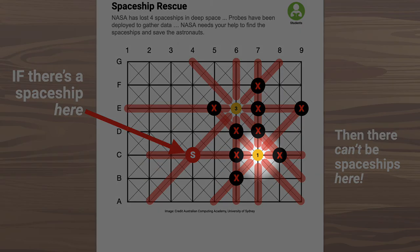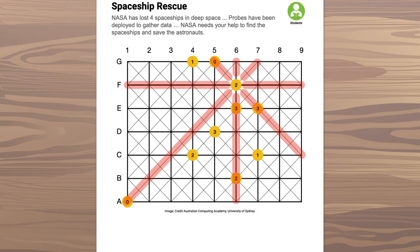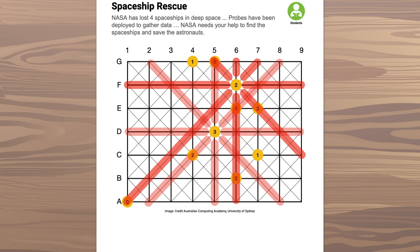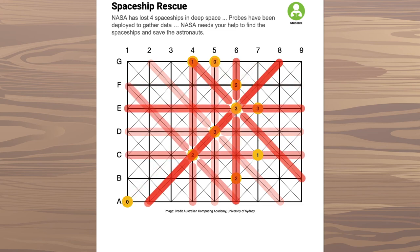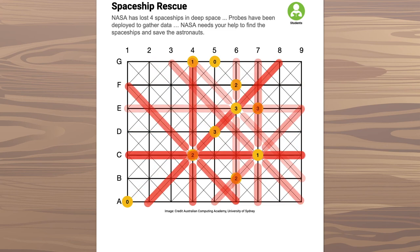Because this probe at C7 can only see one spaceship. If you carefully go through all of the probes, following their lines and seeing where they intersect with lines from the other probes, you can work out places where the spaceships can be.